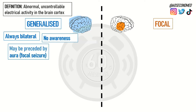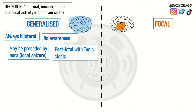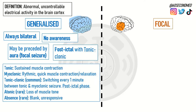A generalized seizure may be preceded by an aura, which is a type of focal seizure. There is a postictal phase associated with a tonic-clonic seizure. The different subcategories of generalized seizures include a tonic seizure, a myoclonic seizure, the well-known tonic-clonic seizure, an atonic seizure, or an absent seizure.